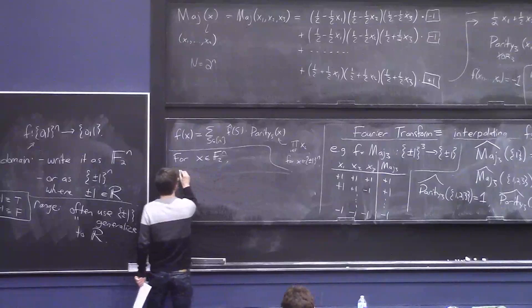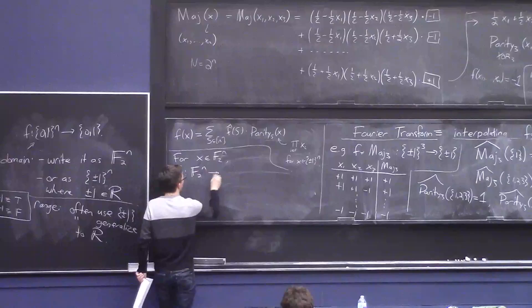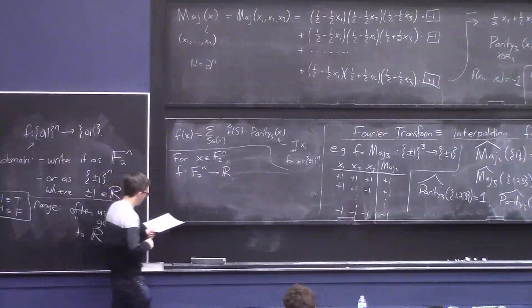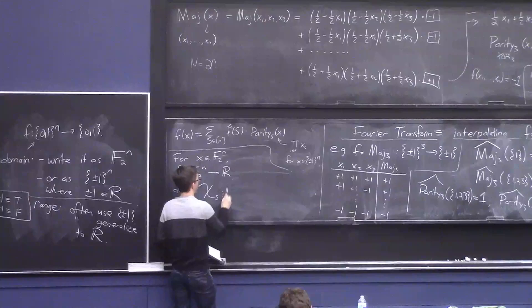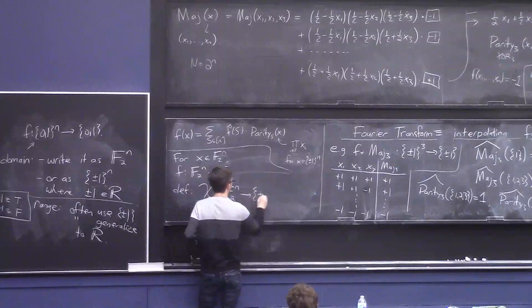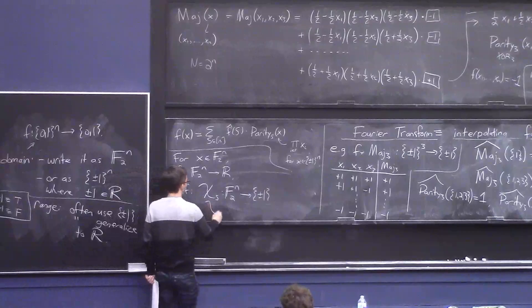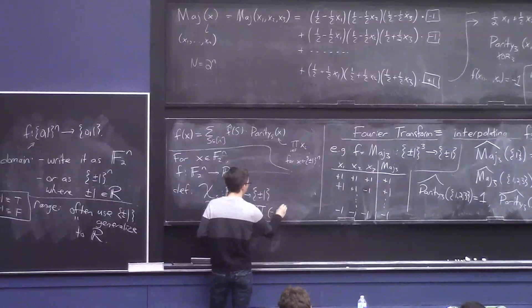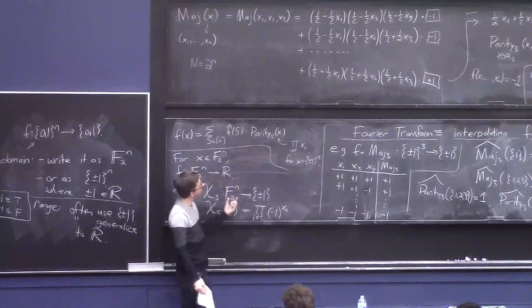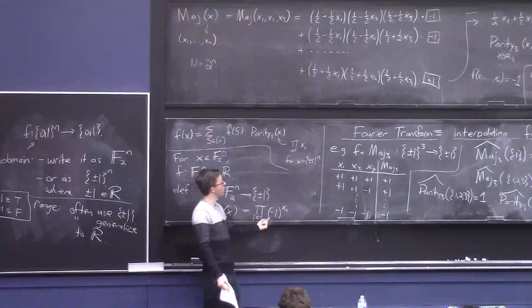I need a new formula for this, and it's quite simple. If I think of x as 0,1 bits mapping into the real numbers, then I'll write chi sub s for this parity function. But now the formula changes slightly: chi sub s of x equals the product over i in s of negative 1 to the x_i. This is really the same as the parity function on the bits of s, except now in 0,1 notation I write minus 1 to the x_i rather than just x_i.